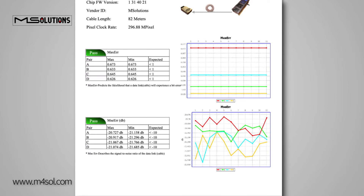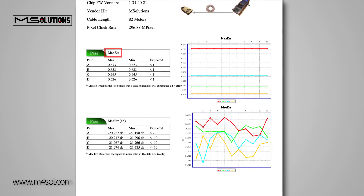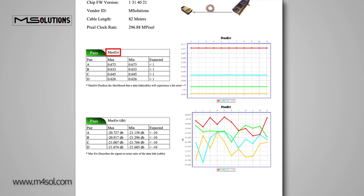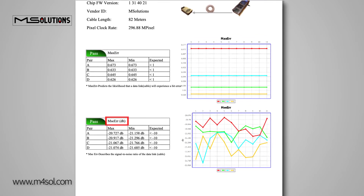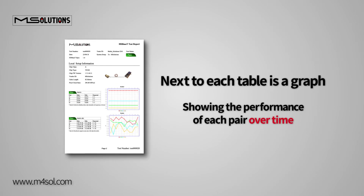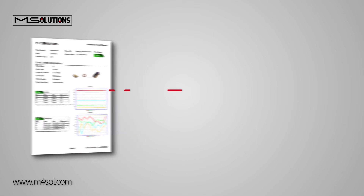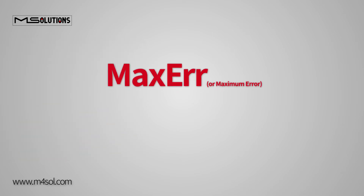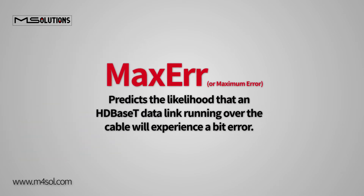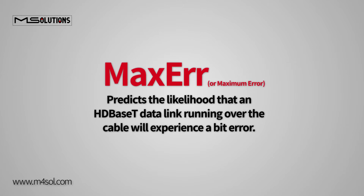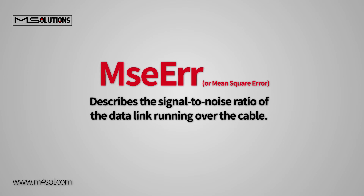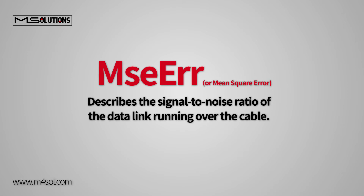In the next section, two tables with error information appear. The upper table contains max error readings, while the lower table contains MSE error results. Next to each table is a graph showing the performance of each pair over time. Max error, or maximum error, predicts the likelihood that an HDBaseT data link running over the cable will experience a bit error. MSE error, or mean square error, describes the signal-to-noise ratio of the data link running over the cable.